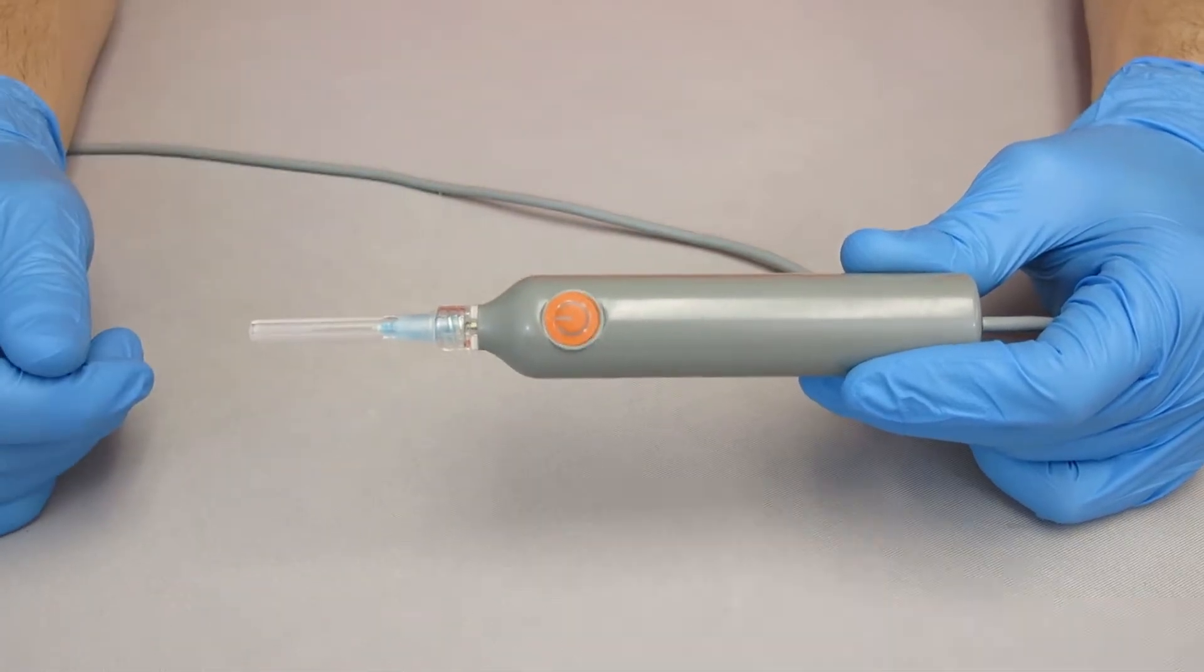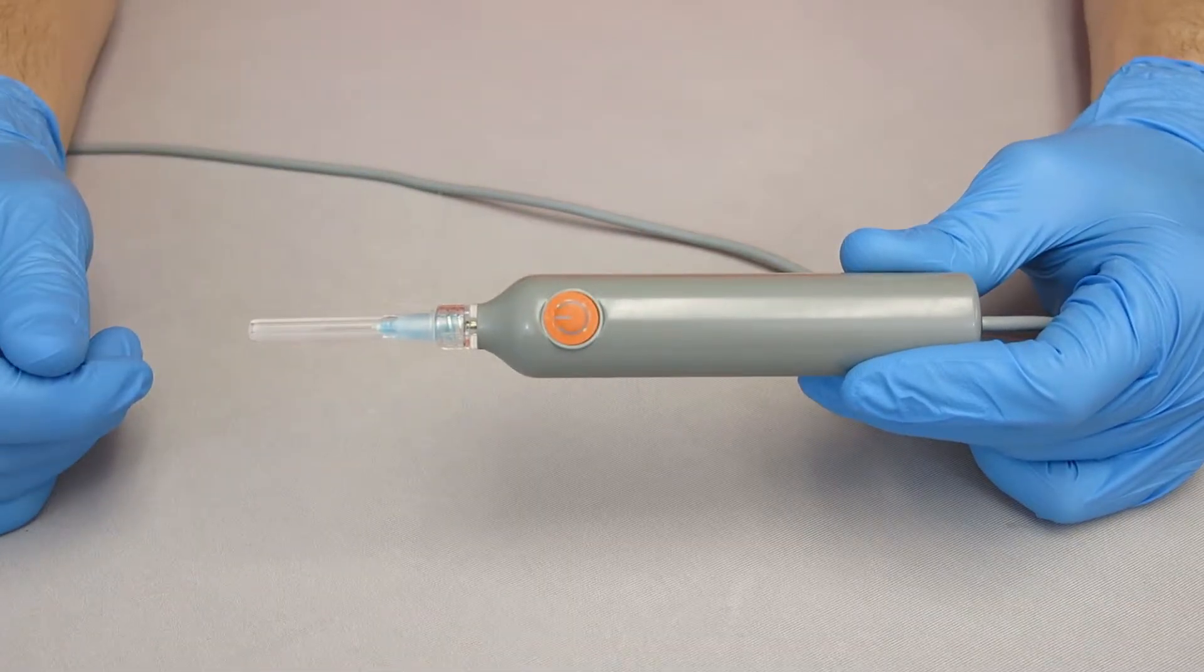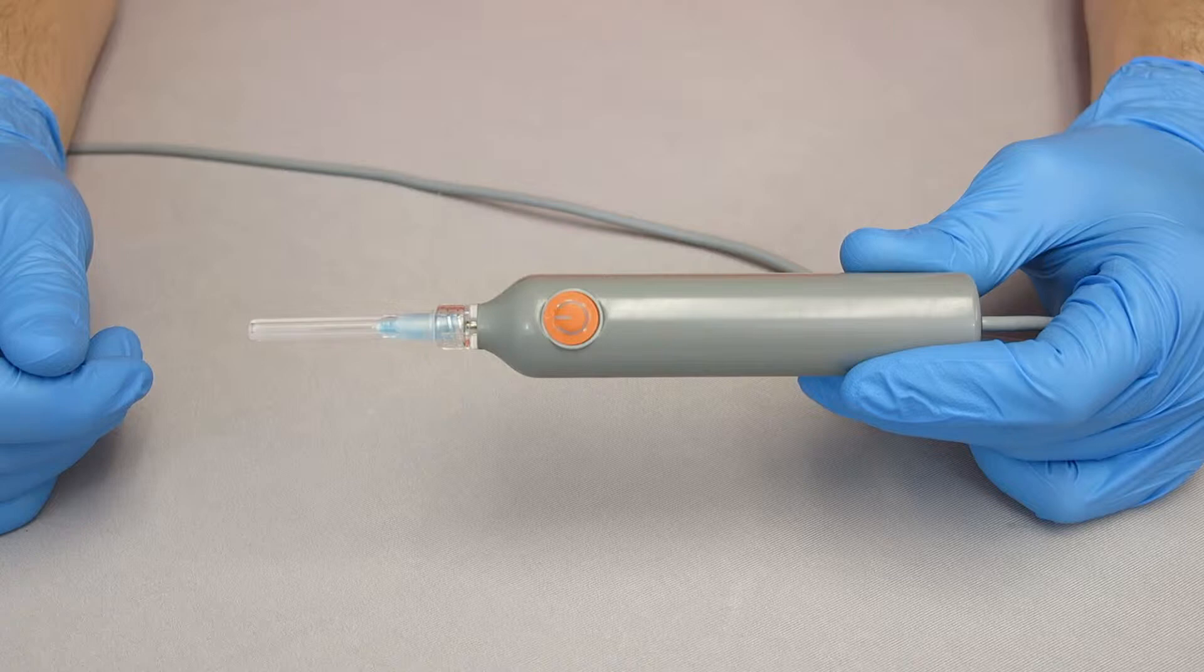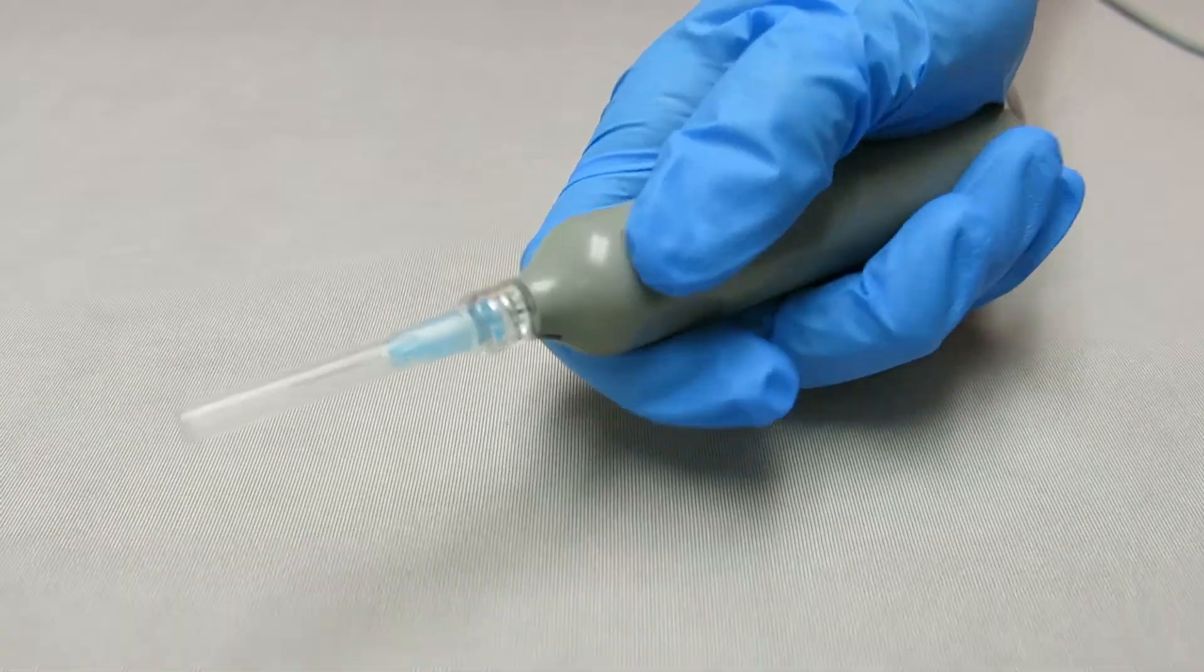Attach a standard Luer lock or Luer slip sharp to the Luer connector on the handpiece. We recommend the sharp stay capped until it is connected to the Luer lock and ready to use. Before use,